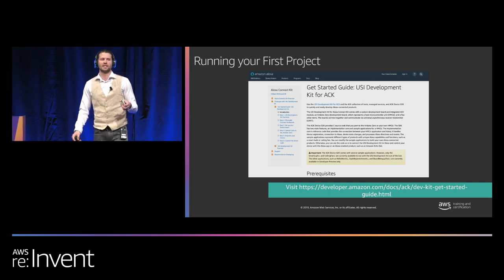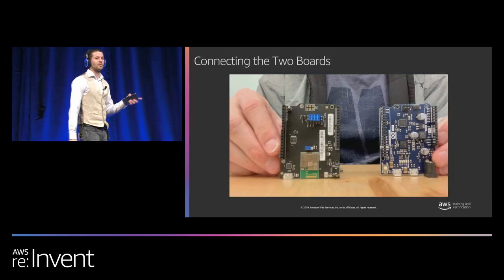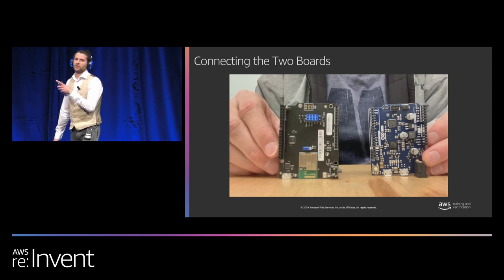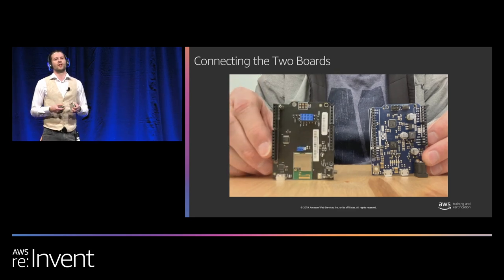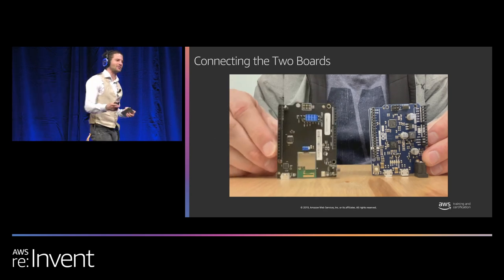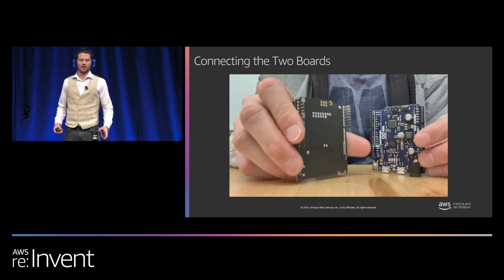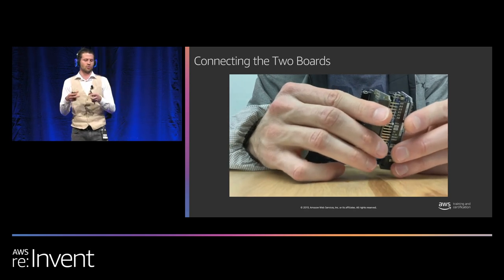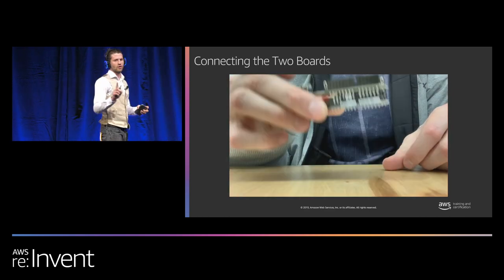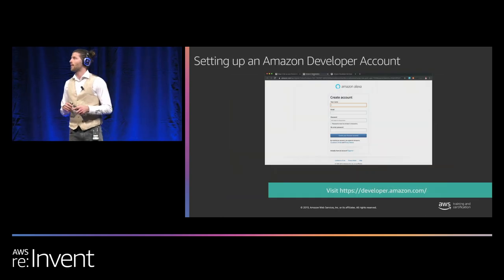We can actually start controlling that LED within 10 to 20 minutes of setting up the demo. Connecting the two boards together: on one side is the Arduino Zero board, which connects to the development machine, and on the other side is the ACK development board with the ACK module. You must make sure the pins all line up correctly and slot in snugly — if one pin is out of place, the board may not power or function correctly.